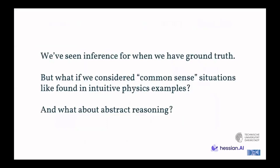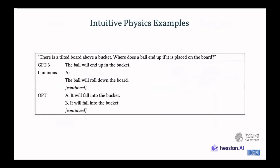Examples like intuitive physics. But what about more abstract reasoning, similar to one of the related works on logic? Here's one of these examples in intuitive physics that we consider. So we might ask a question, there's a tilted board above a bucket, where does a ball end up if it's placed on the board? So because the board is tilted, we would expect it to end up in the bucket. Well, if it's placed accordingly, obviously, there's a lot of ambiguity here, it's not specified, but in a more general sense, that is what we might be able to expect.